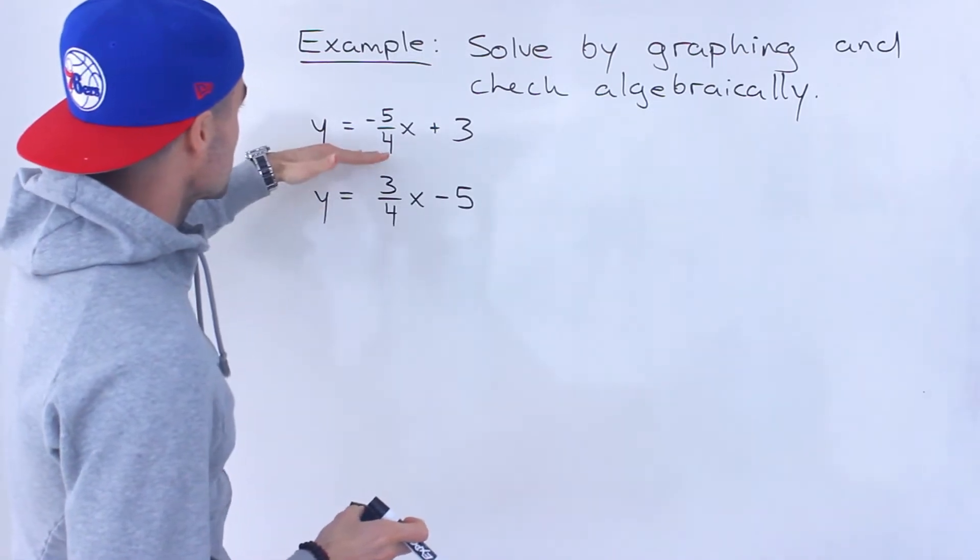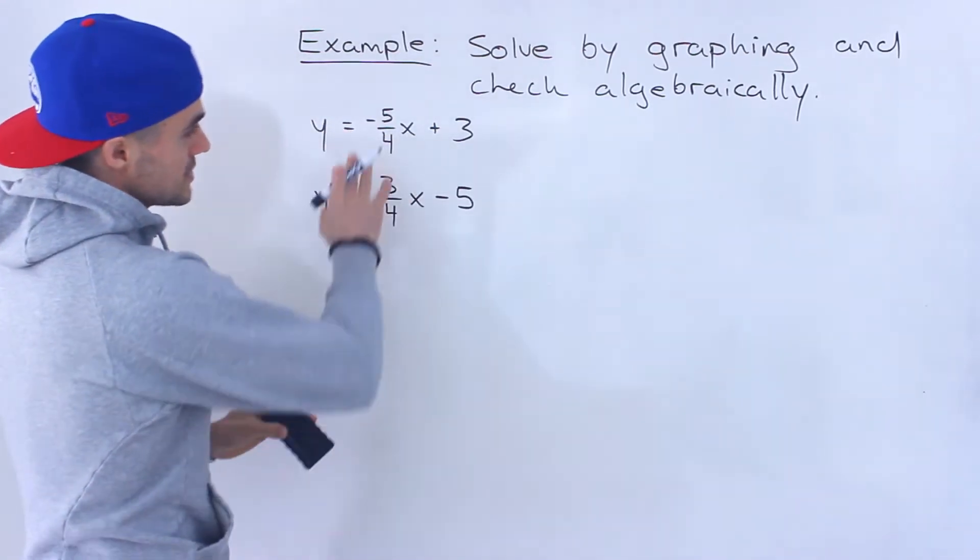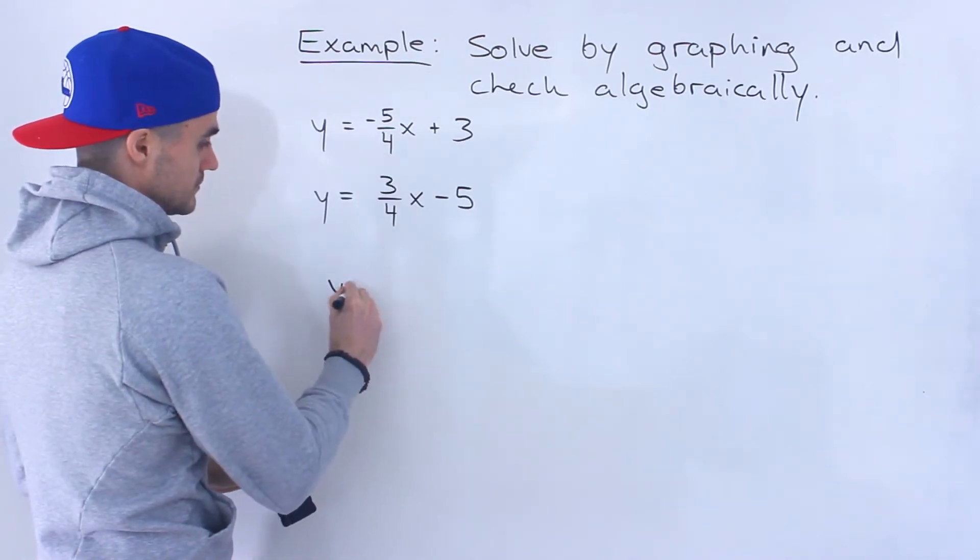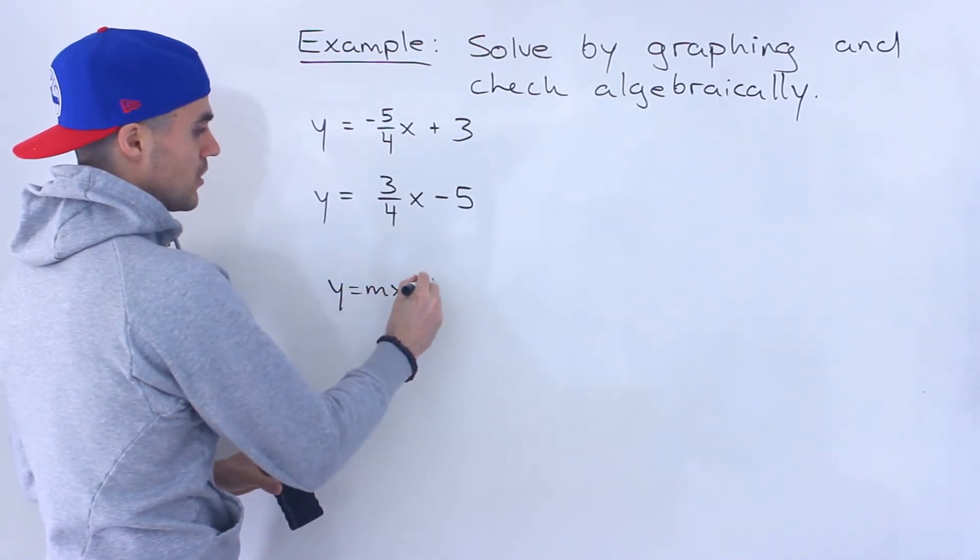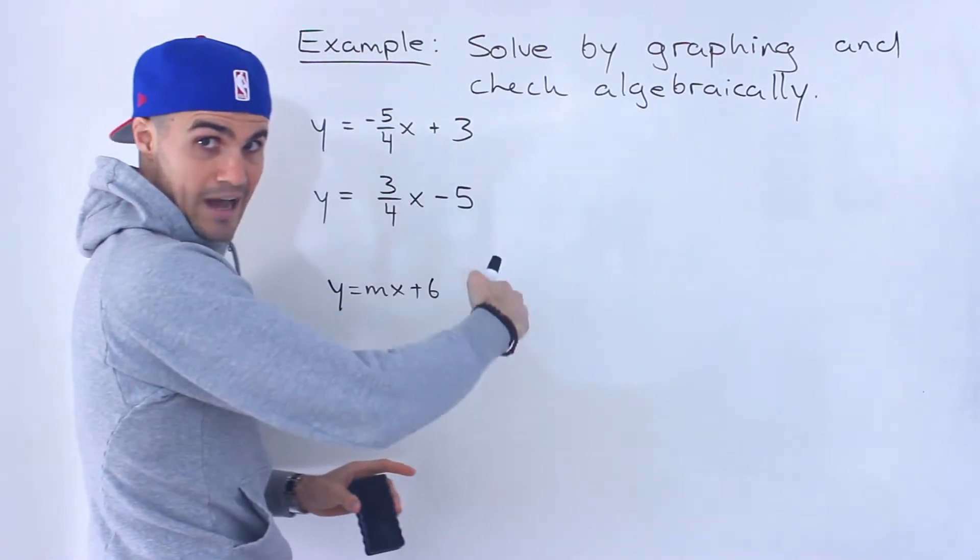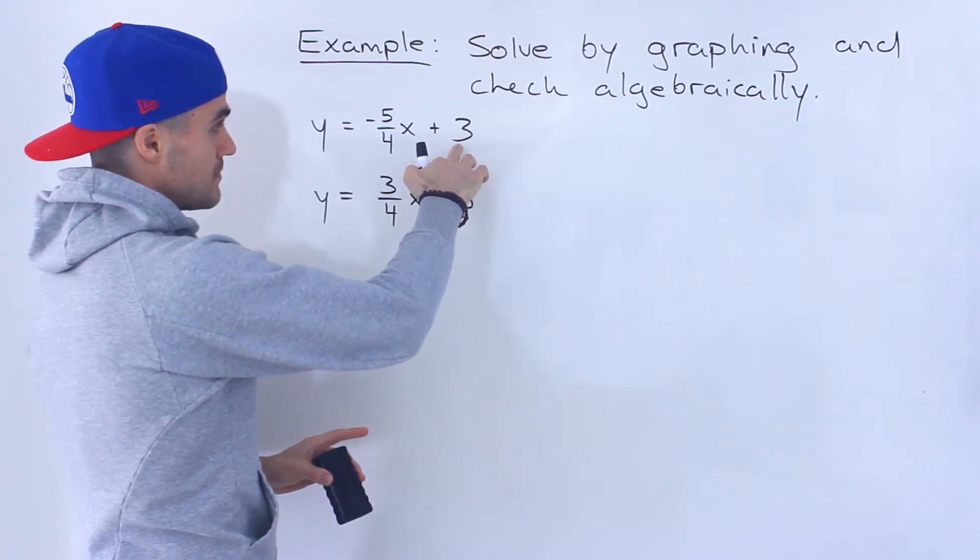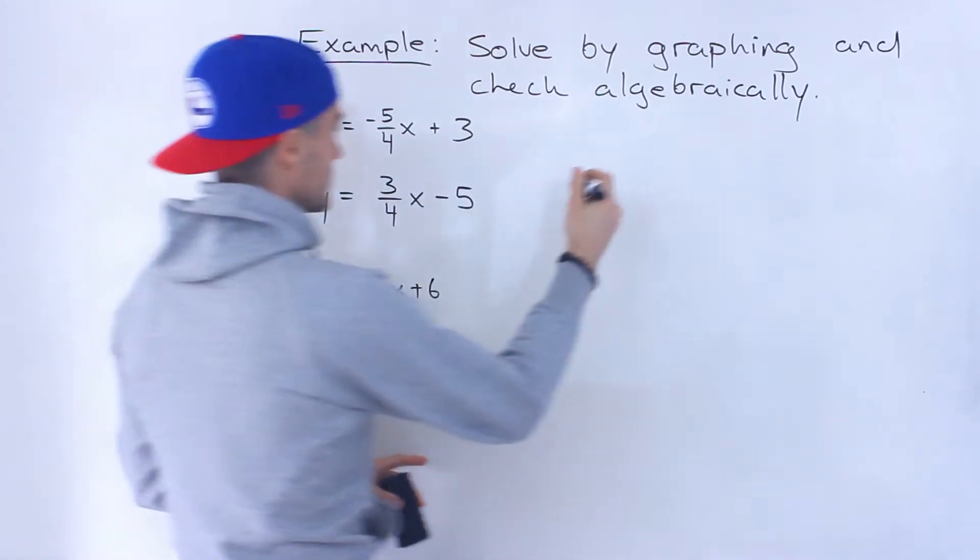So let's start off with this first line. We've got y equals negative 5 over 4x plus 3. Notice it's already in the y equals mx plus b form. So notice the slope is negative 5 over 4. It's going to be a downward sloping line. And then notice that the b value is 3, so that's the y-intercept.